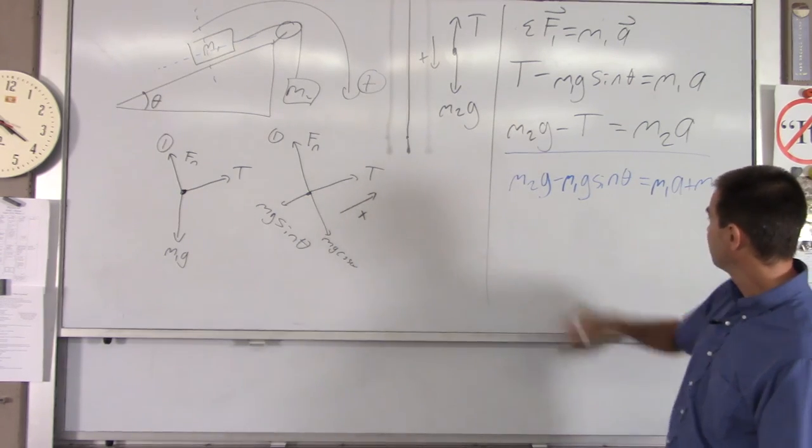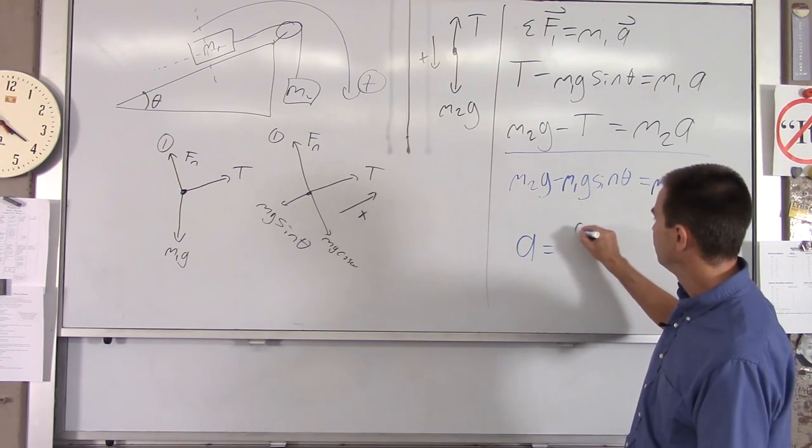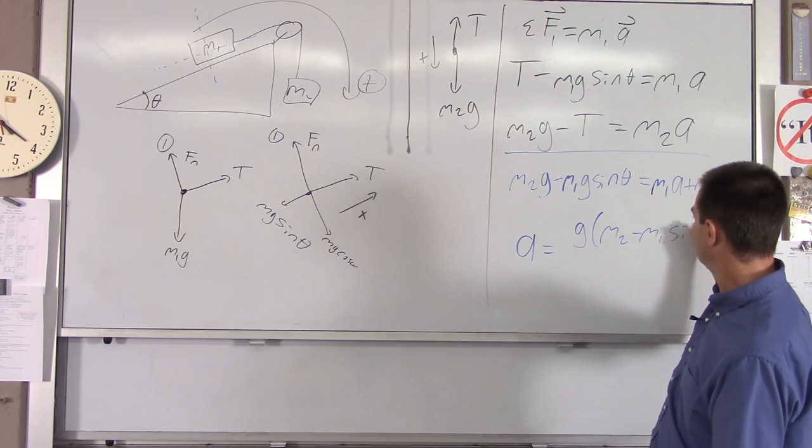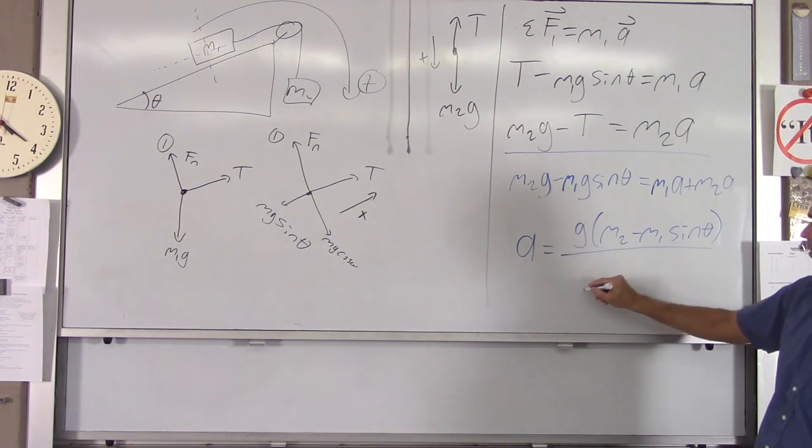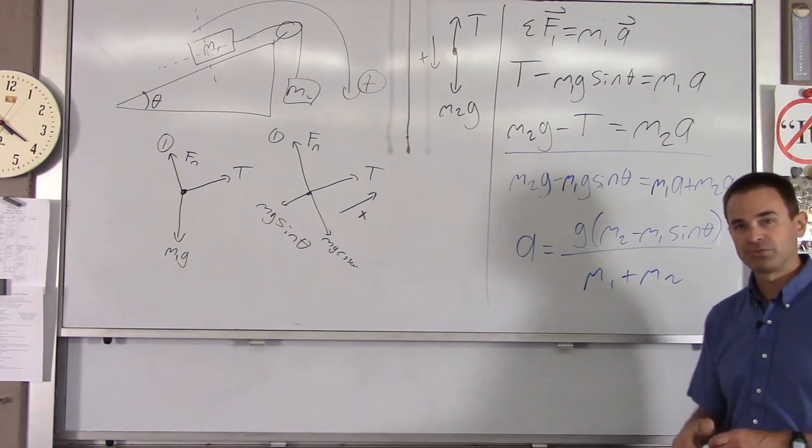So divide both sides by M1 plus M2. And you get the following expression. You get G times M2 minus M1 sine theta over M1 plus M2. And that's your expression for acceleration.